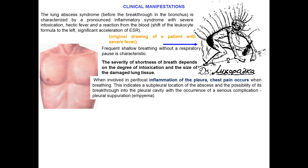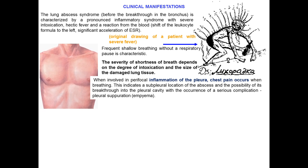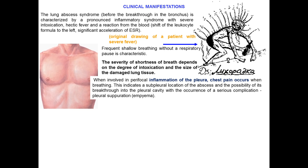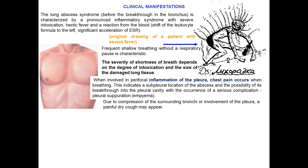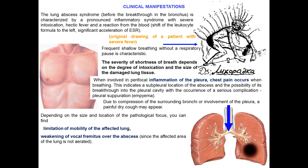The severity of shortness of breath depends on the degree of intoxication and the size of the damaged lung tissue. When peripheral inflammation involves the pleura, chest pain when breathing indicates a subpleural location of the abscess and the possibility of its breakthrough into the pleural cavity, with the occurrence of a serious complication like pleural empyema or impairment due to compression of surrounding bronchi.